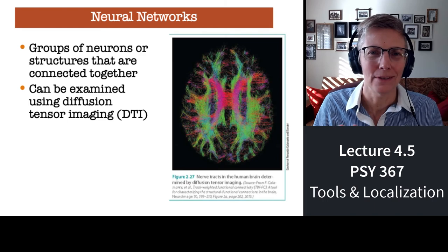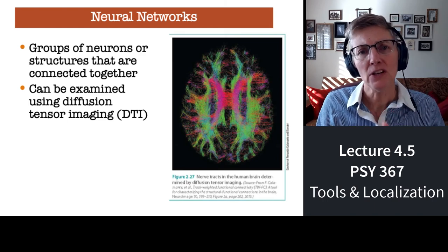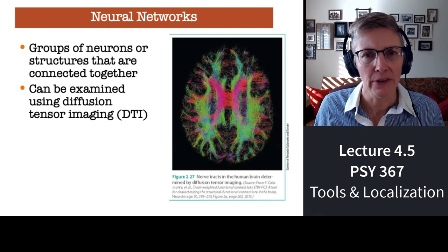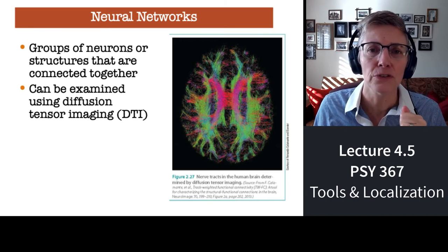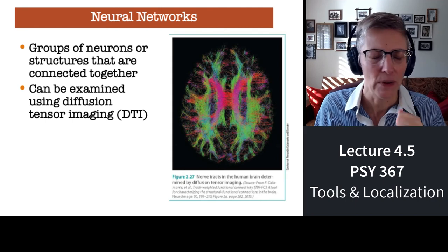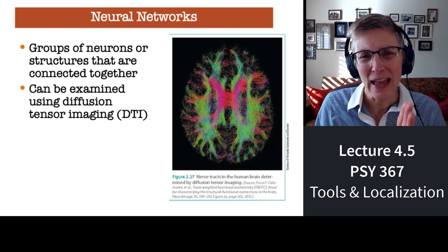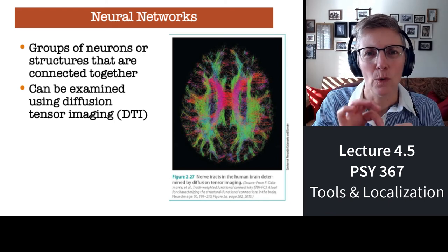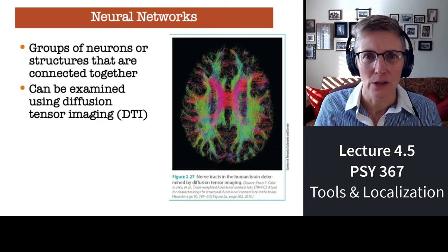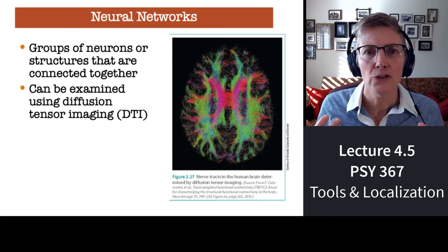I want to show you this amazing picture. Researchers can use information gathered from fMRI systems to perform special analyses called Diffusion Tensor Imaging, or DTI. These processes give rise to gorgeous pictures showing the pathways between different areas in the brain. This tool, DTI, is helping cognitive neuroscientists understand which different parts of the brain work together.